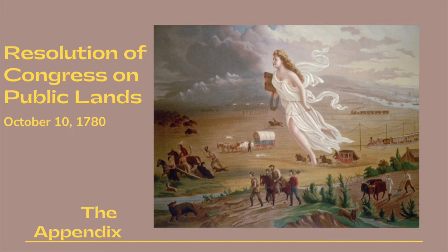The ownership, control, and administration of the western lands was one of the most acute and perplexing of the problems of the old empire. By their charters, many of the American colonies were entitled to lands west of the Appalachians, and the Proclamation of 1763 closing these lands to settlement aroused general resentment. With the outbreak of the Revolution, the states resumed their titles to their western lands.